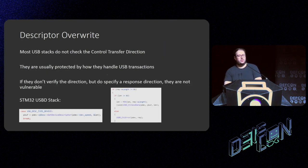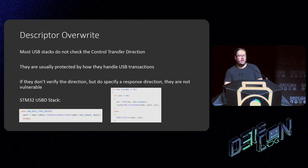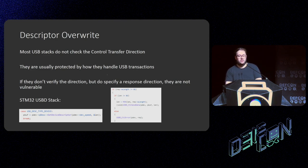Most USB stacks don't check the control transfer direction — they're usually protected by how their own USB hardware works, with send and receive functions. For instance, in the STM32 USB device stack, if you send it a `GET_DEVICE_DESCRIPTOR` request, it will explicitly send a control-send-data request to its own hardware, meaning it can't receive data back. However, in this instance I could send data to it, meaning I had full control overwriting data in memory.